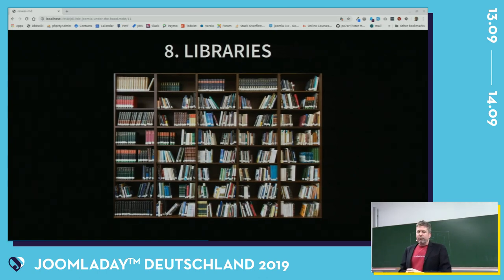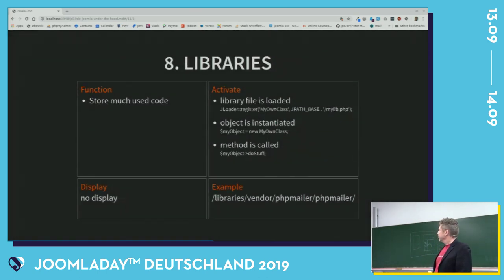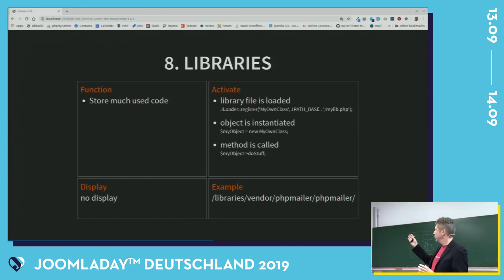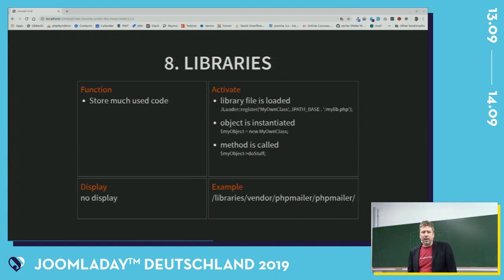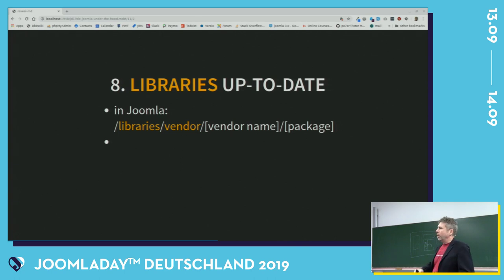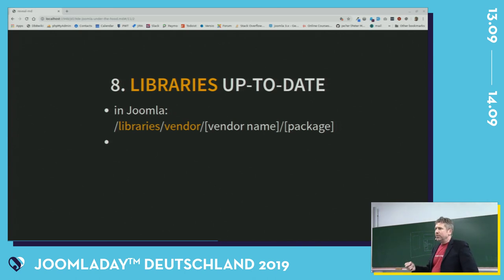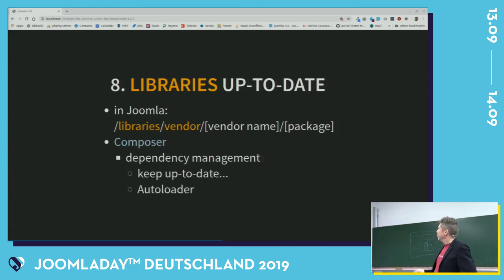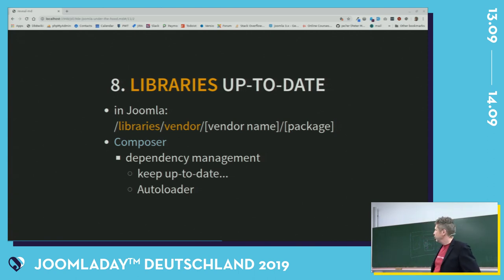Parts that are often forgotten are the libraries of Joomla. Libraries store code that you use in multiple places. If you have multiple components, you can use a library for things that you use a lot. If you look in Joomla, you see libraries/vendor, PHP mailer — these are external libraries that are used in Joomla. To keep those up to date, regular users don't have to do anything, but before a new version of Joomla is shipped to end users, people from the project will use Composer to update the packages, because Composer is a really nice dependency management tool to keep packages up to date. It also has an autoloader.